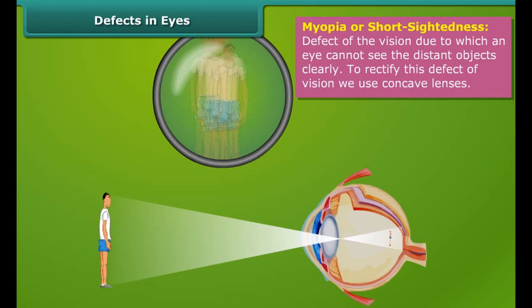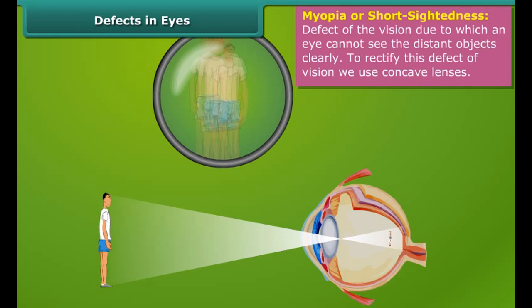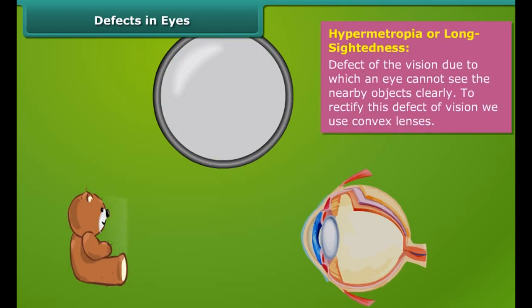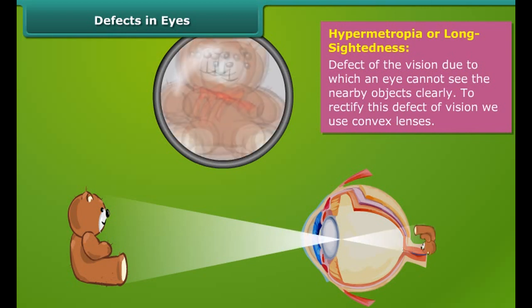Myopia, or short sightedness, is a defect of vision due to which an eye cannot see distant objects clearly. To rectify this defect of vision, we use concave lenses.